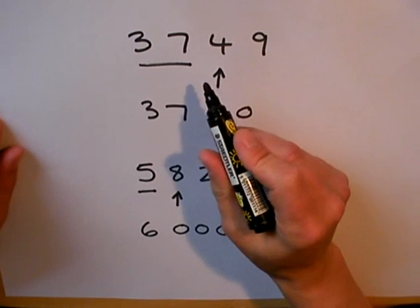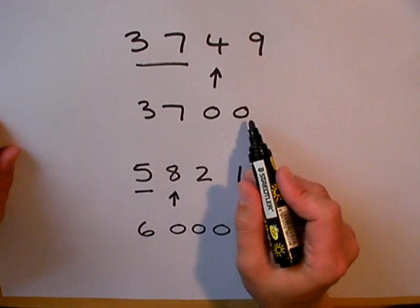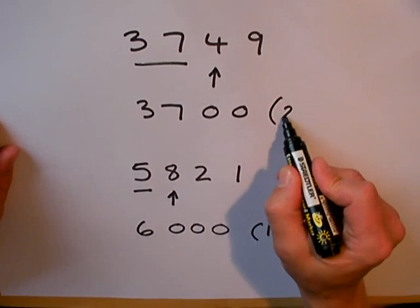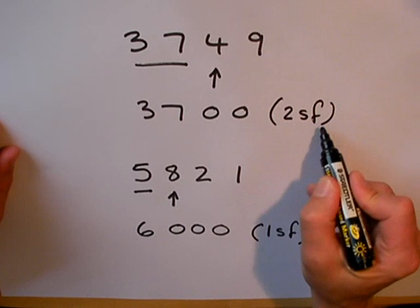This number 3749 has been rounded to two significant figures. So I can put 2sf to show this.